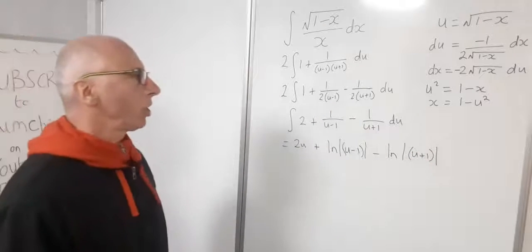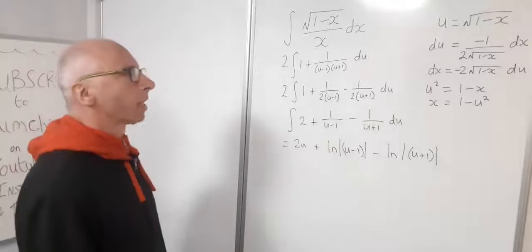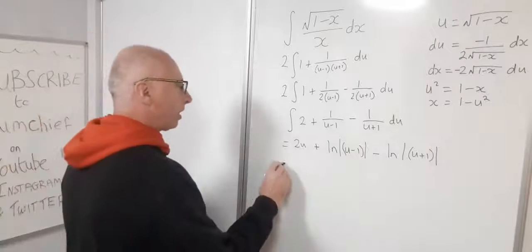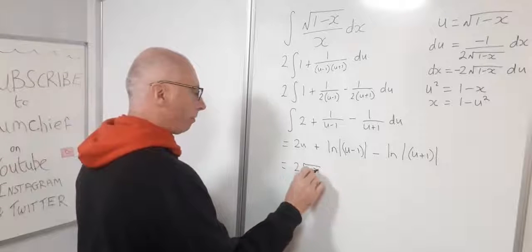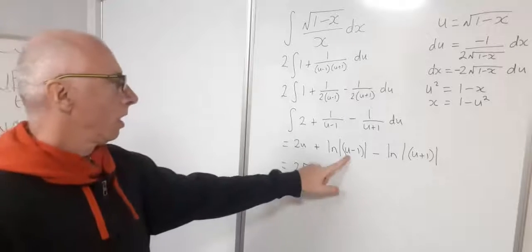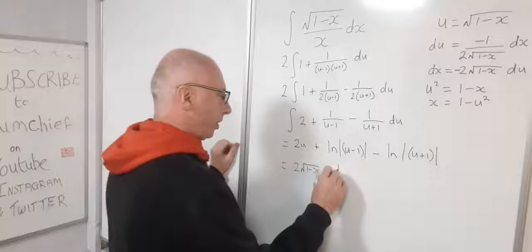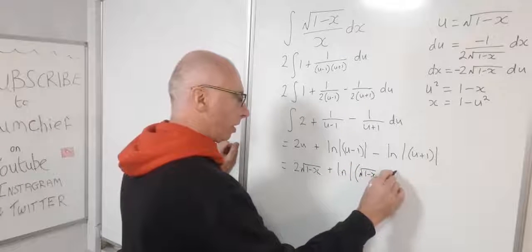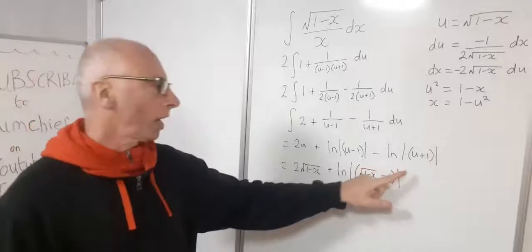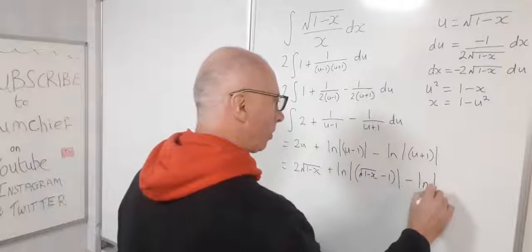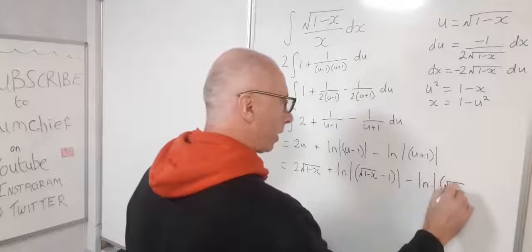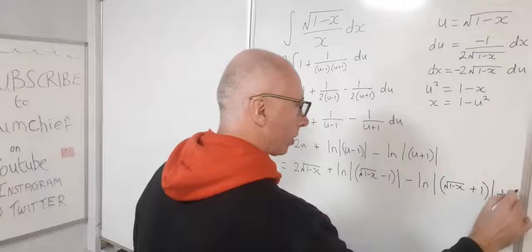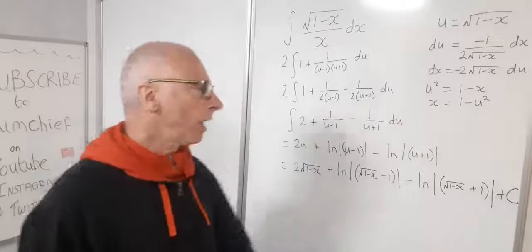Now we back-substitute u equals square root of 1 minus x. The final result is: 2 times square root of 1 minus x, plus natural log of absolute value of (square root of 1 minus x minus 1), minus natural log of absolute value of (square root of 1 minus x plus 1), plus C. That's quite a big result for our integral.